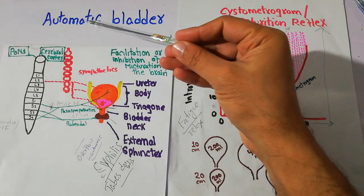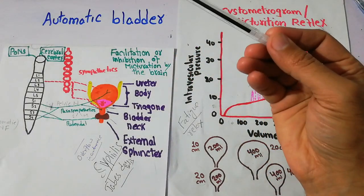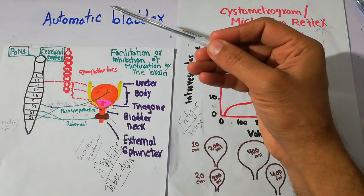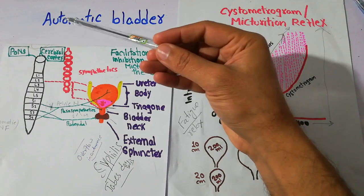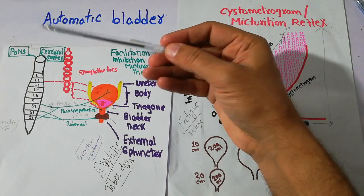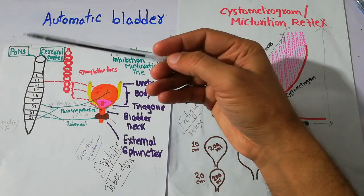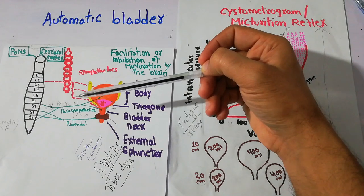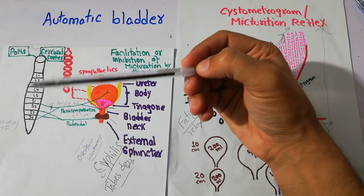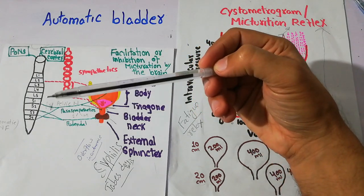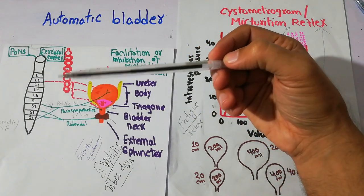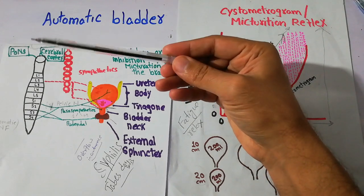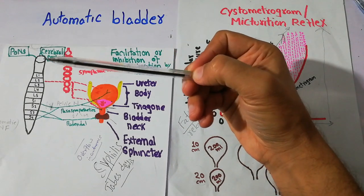Today we are going to talk about automatic bladder. What is automatic bladder? As the name suggests, it is automatic. Automatic bladder is a bladder which is out of control, or in which the micturition reflex is occurring automatically without the control of the patient.